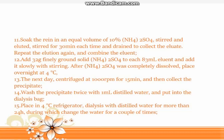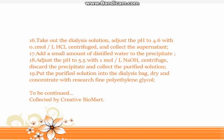Step 14: Wash the precipitate twice with 1 mL distilled water and place into a dialysis bag. Step 15: Place in a 4°C refrigerator and dialyze with distilled water for more than 24 hours, changing the water several times. Step 16: Take out the dialysis solution and adjust the pH to 4.6 with 0.1 mol/L HCl, then centrifuge and collect the supernatant.